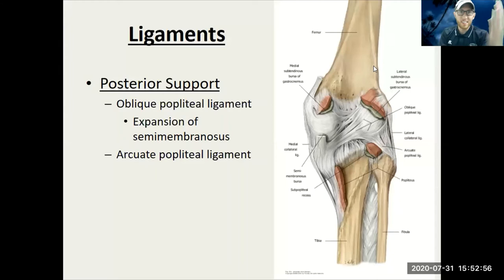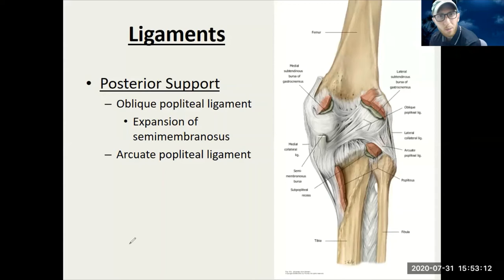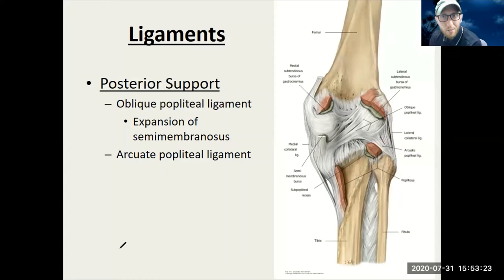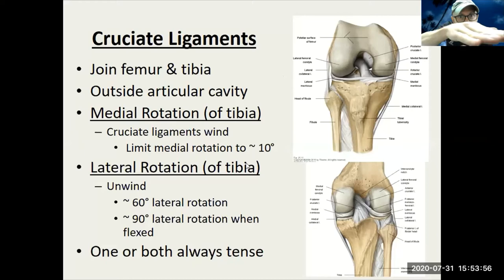Now let's talk posterior and anterior support. There's actually a lot of support posteriorly, because anteriorly you have a bone — you have the patella — stopping the knee from going too far. But posteriorly, if you feel the back of your knee in between the hamstring tendons and the gastrocnemius, you'll feel just a soft, cushiony popliteal region. It has a ligament called the oblique popliteal ligament going obliquely across the back side, giving it support so it doesn't extend too far.